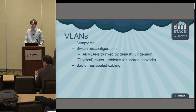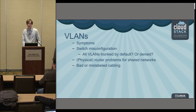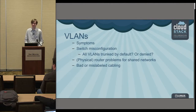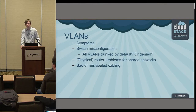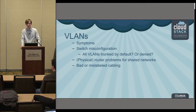Another issue is that different switches have different concepts of allowing VLANs by default or not. Even within the same manufacturer, within a particular model and firmware version, turning on a trunk port might allow all VLANs by default or it might deny them. So you have to check the documentation to see if you need to explicitly set which VLANs are allowed.